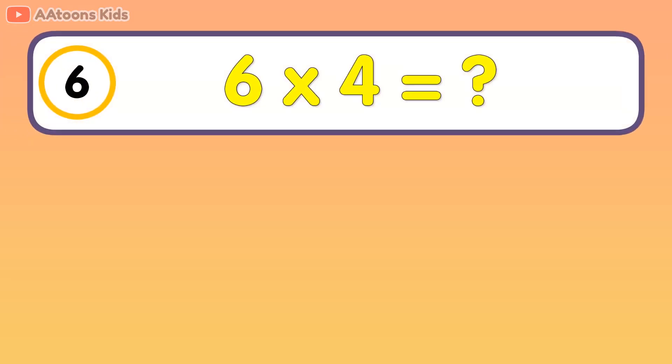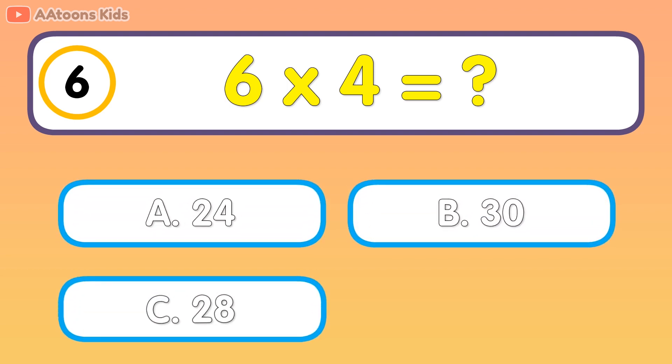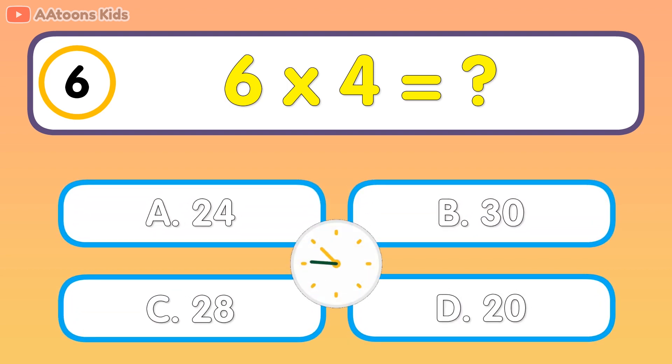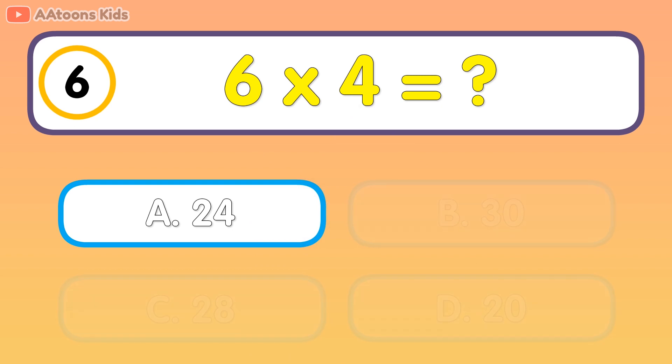What is 6 multiplied by 4? 24. First, you need to learn the multiplication table. Let's count: 6 times 1 is 6, 6 times 2 is 12, 6 times 3 is 18, 6 times 4 is 24. So the answer is 24, 6 times 4 is 24.